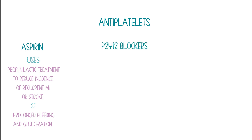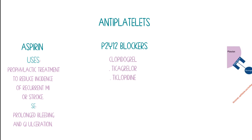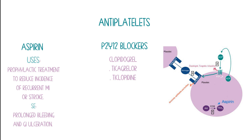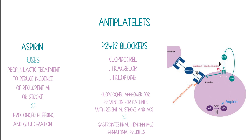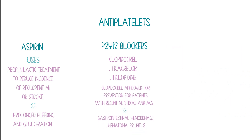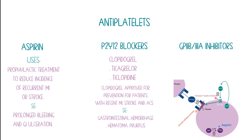Second, we have the P2Y12 blockers like clopidogrel, ticagrelor, and ticlopidine. Normally, ADP binds to this receptor to activate the GP2B3A receptor, which activates fibrinogen and causes platelet crosslinking. These agents block the P2Y12 receptors. Clopidogrel is approved for prevention in patients with recent MI, stroke, and ACS. Side effects include GI hemorrhage, hematoma, and pruritus. The last agents in this group are the GP2B3A inhibitors like abciximab, eptifibatide, and tirofiban.